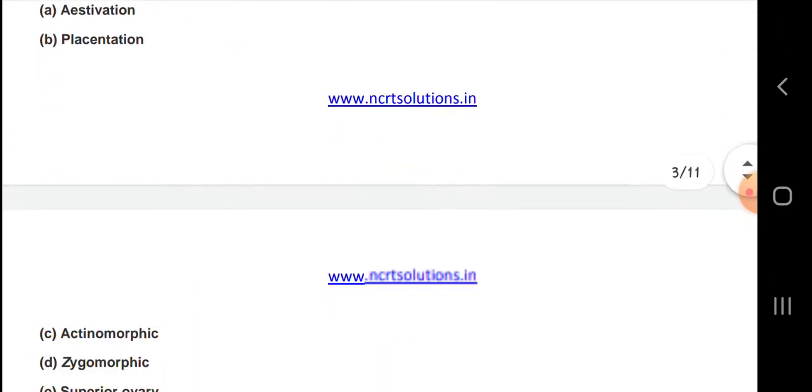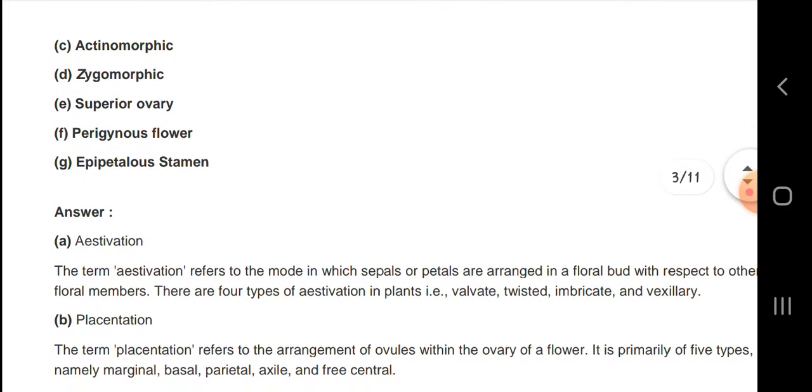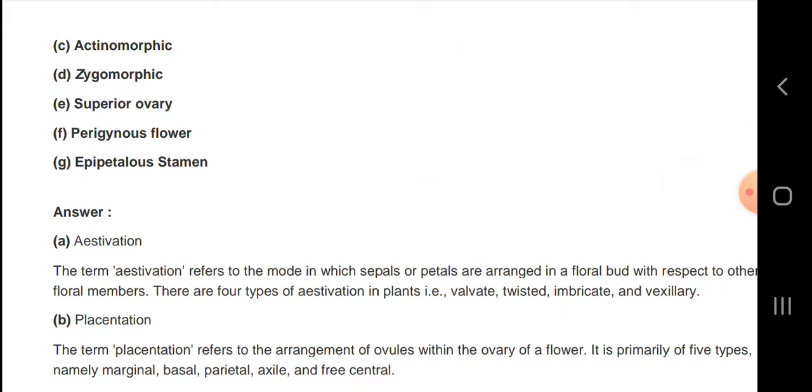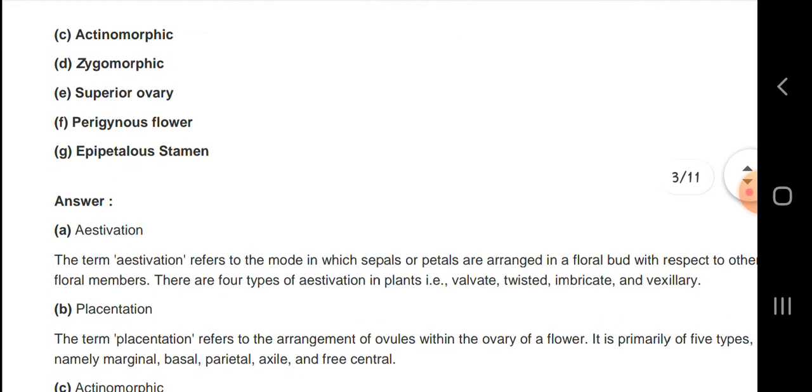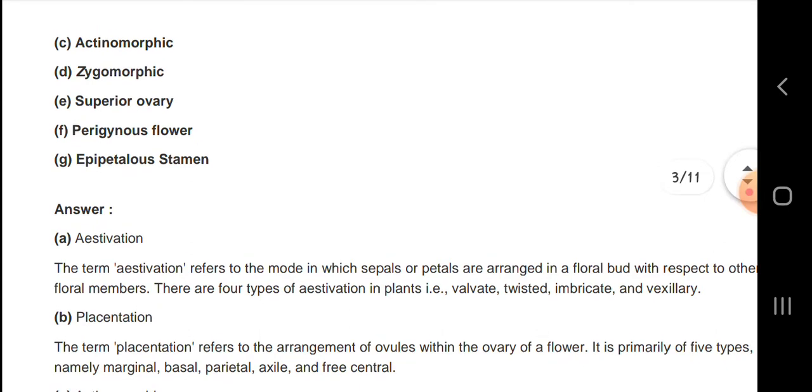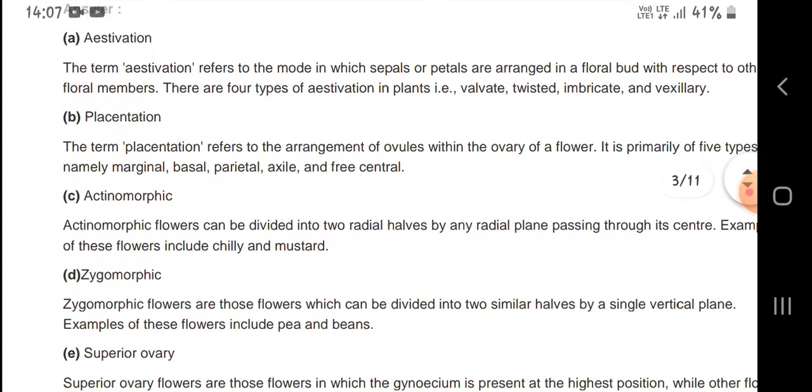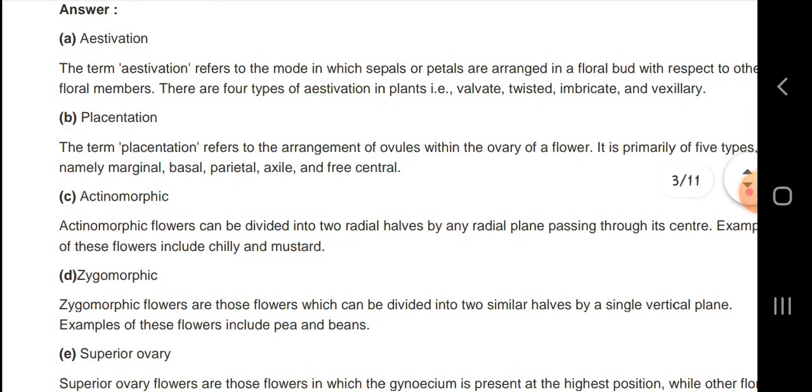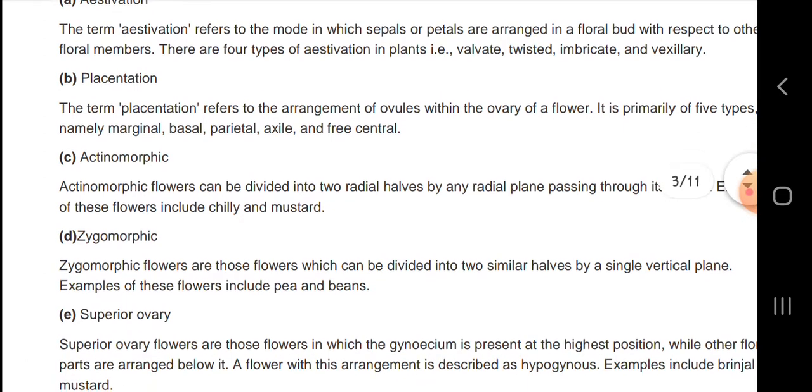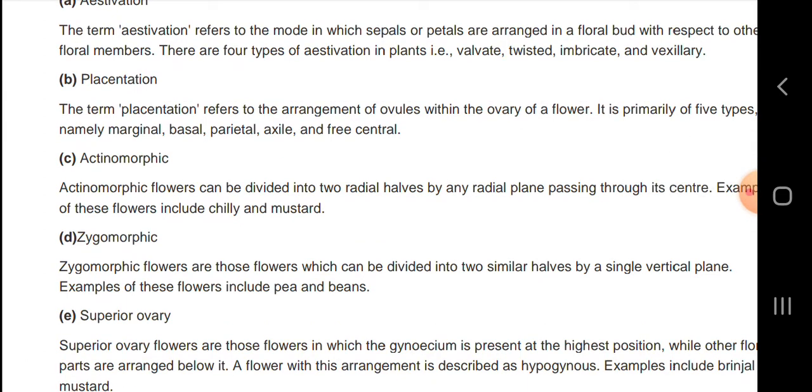Let us know about aestivation and placentation. Aestivation refers to the mode or arrangement in which sepals or petals are arranged in floral buds. Placentation refers to the arrangement of ovules within the ovary of the plant.